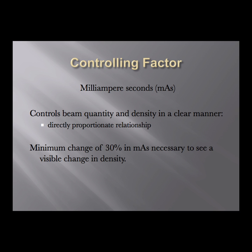One of the guiding rules for mAs is that in order to see any visible change on the film — for example, if you're doing two successive films on the same patient and the first one is too light — you have to go up at least 30% in mAs to see any visible change. The suggestion is to use values like half, twice, or three times as much mAs to make a substantial change. You don't want to go up just a couple of mAs at a time because you won't see any change from one film to the next.